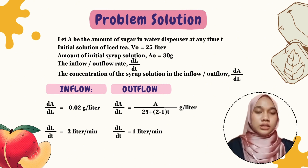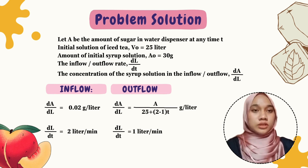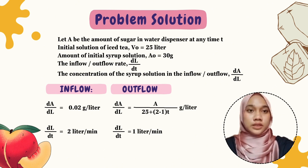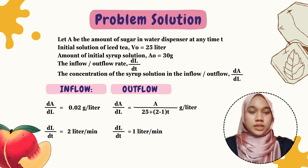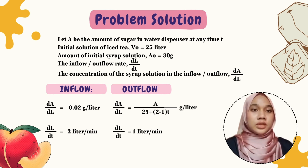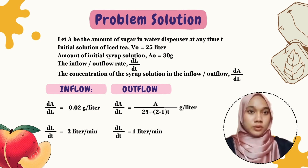First, we write down the information from the question. Let A be the amount of sugar in the water dispenser at any time t. The initial volume of iced tea is 25 liters, and the initial amount of syrup solution is 30 grams. For the inflow, the concentration dA/dL equals 0.02 grams per liter, and the flow rate dL/dt equals 2 liters per minute.